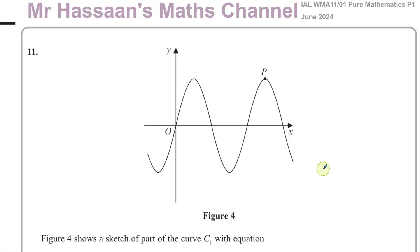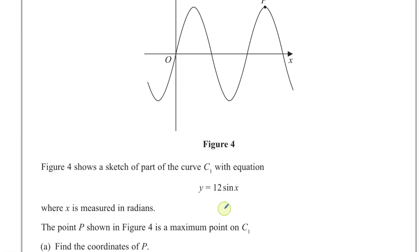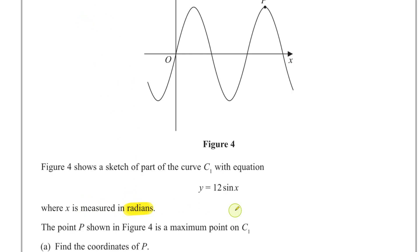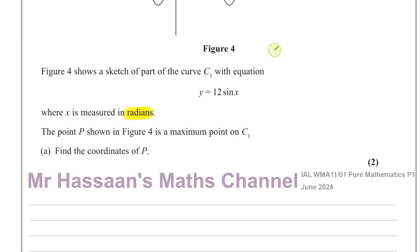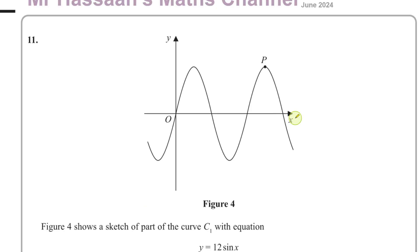Here we have a question about a trig function. Figure 4 shows a sketch of part of the curve C1 with the equation y equals 12 sine x, where x is measured in radians — be careful here. The point P in figure 4 is a maximum point on C1. Find the coordinates of P — a simple two-mark question.